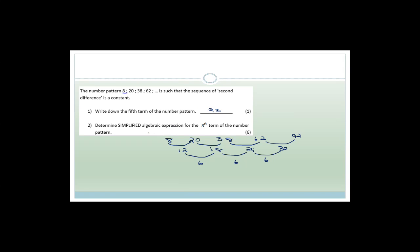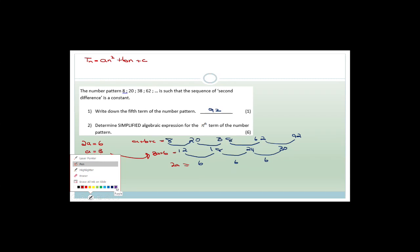For the nth term, T(N) = AN² + BN + C. The second difference = 2A = 6, so A = 3. Using the first difference at T1: 3A + B = 12, so 9 + B = 12, giving B = 3.